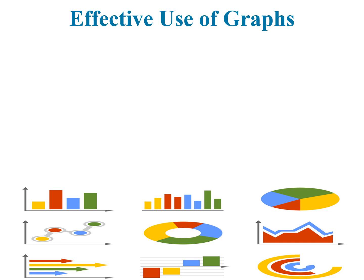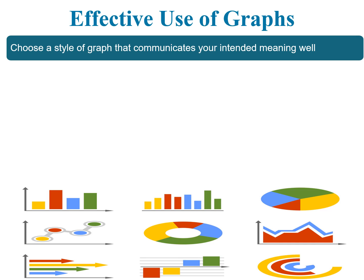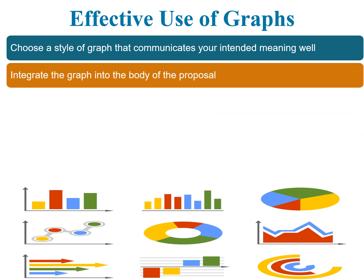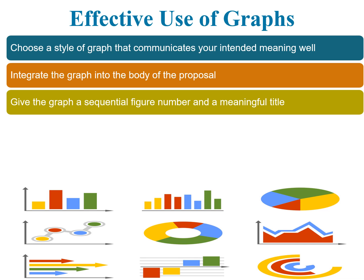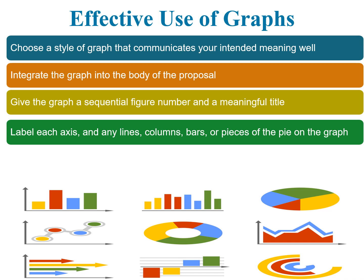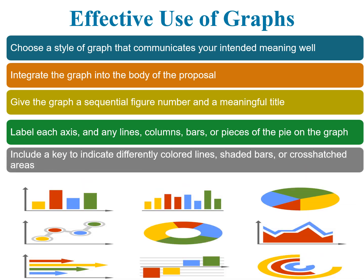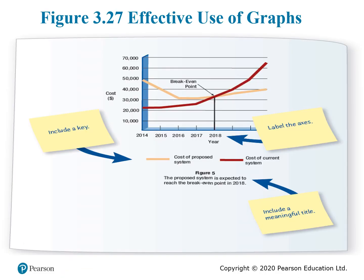For effective use of graphs: choose a style that communicates the intended meaning well, integrate the graph into the body of the proposal, give the graph a sequential figure number and meaningful title, label each axis and any lines, columns, or bars, include a legend key using different colors and shapes to make it easy to understand. The main idea is to include key measures — for example, labeling what the red line represents — and include a meaningful title and number, labeling the axes and lines.